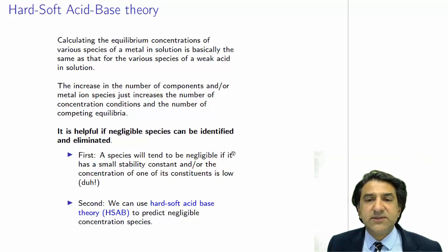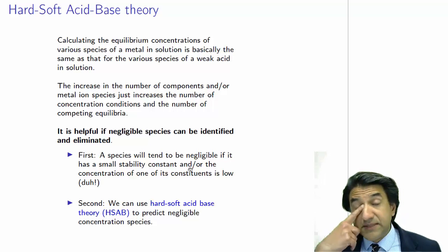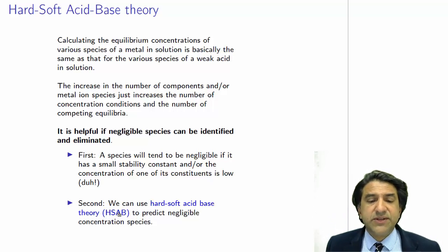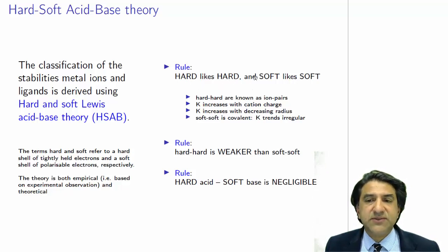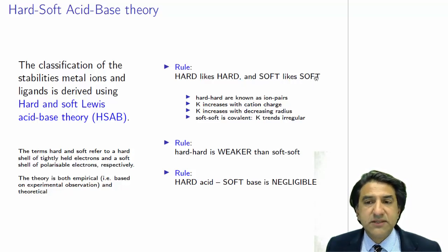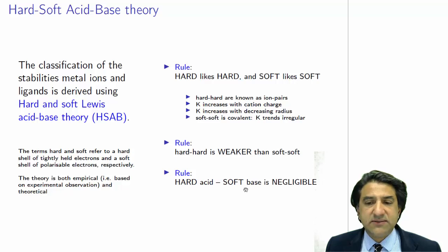What if the concentration isn't small and what if we don't know the formation constant? Well, then we have to use the hard-soft acid-base theory to predict that. The rule is: hard likes hard. A hard species likes a hard species and a soft species likes a soft species. Hard-hard has strong interactions forming large formation constants, and soft species like soft ligands and also form strong interactions, meaning they're very insoluble. The second rule is hard-hard is weaker than soft-soft. And the third rule: hard-soft is absolutely negligible.